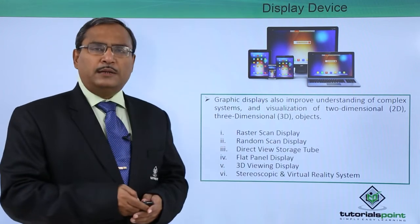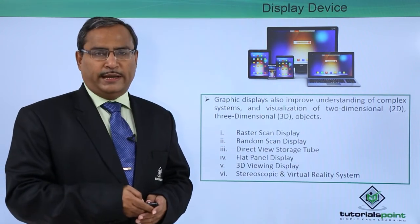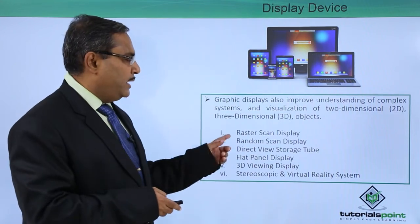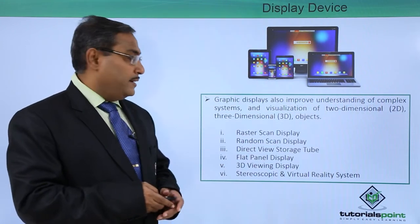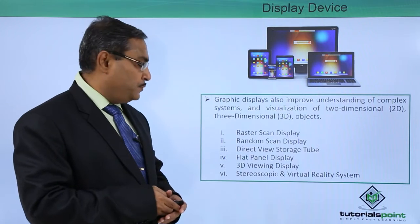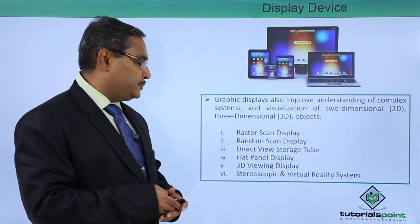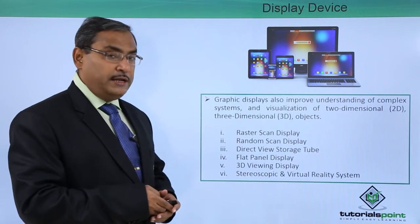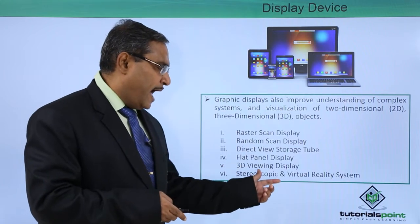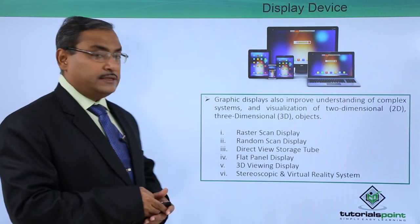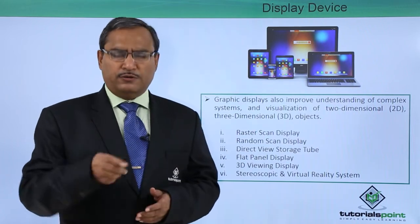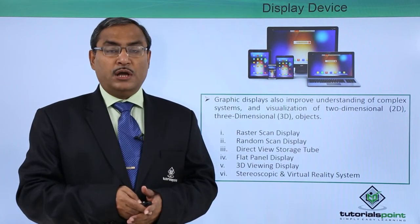Here we have multiple different ways in which we can display our images. We have the raster scan display, random scan display, direct view storage tube, flat panel display, 3D viewing display, and stereoscopic and virtual reality systems. Let us go through each one in further detail in our next videos.